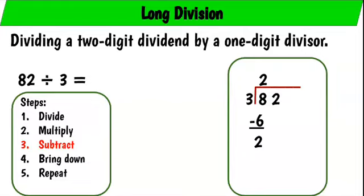Now we're comparing: how many groups of 3 can we get from that 2? We cannot. So this is where we go to our next step, bring down. Because 3 cannot go into 2. So we're comparing now, how many groups of 3 can we now get from that number 22?